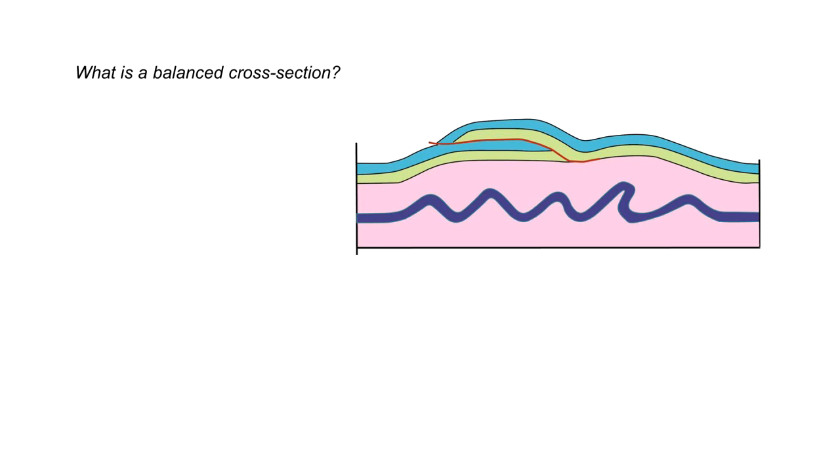Let's explore this a little bit further with this hypothetical example. So in a balanced cross section all layers have experienced the same horizontal shortening of course this is for contractual tectonics.